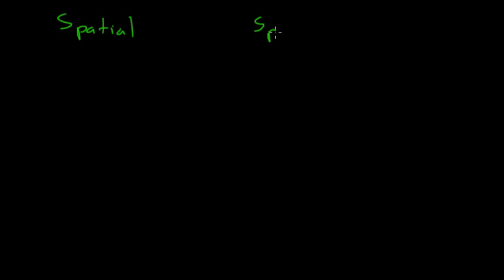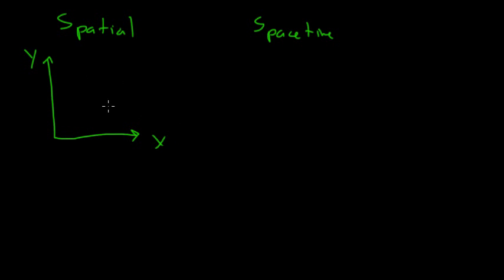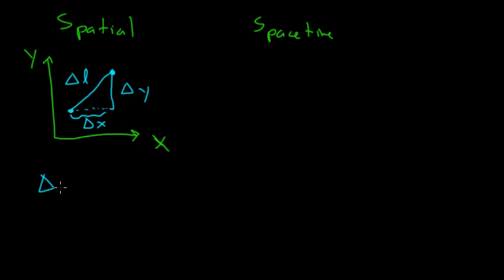To look at these things, we're going to compare the spatial picture, which we might be more familiar with, to a space-time picture. Let's say I have some 2D spatial coordinates — a y-axis and an x-axis — and I want to measure the distance between two points, which we'll call delta L. Using Pythagoras' theorem: delta L squared equals delta x squared plus delta y squared.